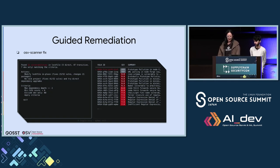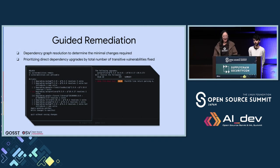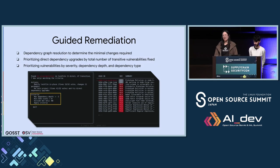Here is a screenshot of the interactive interface of guided remediation. Currently, guided remediation supports npm package.json, package-lock.json, and Maven pom.xml files. Guided remediation involves dependency graph resolution to determine the minimum changes required, so you no longer need to trial which newer versions of a direct dependency fix a transitive dependency. It can prioritize direct dependency upgrades by total number of transitive vulnerabilities fixed. In the screenshot, the number of vulnerabilities that can be fixed as well as potential new vulnerabilities introduced are listed for each dependency upgrade. Vulnerabilities can also be prioritized by severity score, dependency depth, and dependency type — for example, whether to exclude development dependencies.